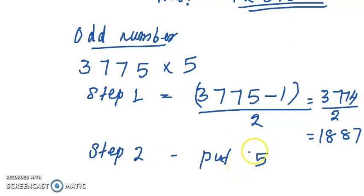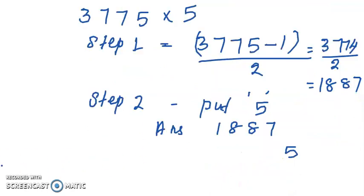As the last digit we put 5. So the answer is 18875. In case of even number we are putting 0 at the last, but here in case of odd number we put 5 at the last. That is very simple. In a second we can find the value.